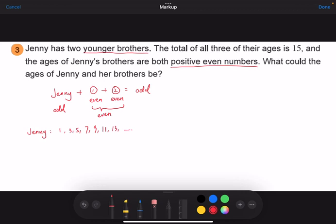Then can we have one? So if Jenny is one, then the two brothers will be seven and seven. So right now we just consider the two brothers to be of the same age. So one plus seven plus seven is 15. But Jenny is one year old and her two brothers are seven years old. So apparently this is impossible. They won't be younger brothers in this case. So one we cannot use.